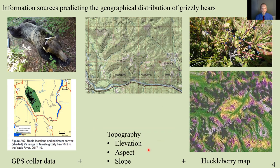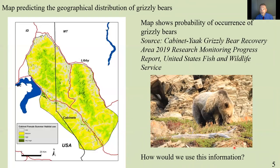With this information — locations, topography, and huckleberry maps — the United States Fish and Wildlife Service creates a predictive map showing dark green areas, which are high elevation areas with a high probability of seeing grizzly bear. Yellow indicates lower probability of the grizzly bear being present, lower down in the valleys.